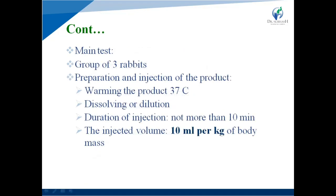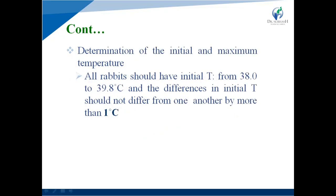In the main test, a group of three rabbits is taken. Preparation and injection of the product involves warming the product at 37 degrees centigrade and dissolving or dilution. Duration of injection is not more than 10 minutes, and the injection volume given to the rabbit is 10 ml per kg of body weight. All rabbits should have an initial temperature from 38 to 39 degrees centigrade, and the difference in initial temperature should not differ from one another by more than 1 degree centigrade.